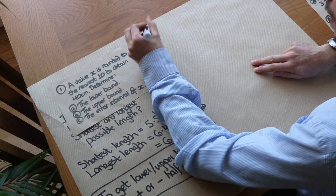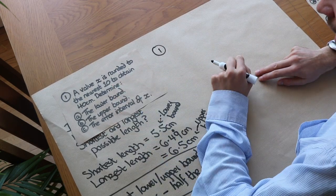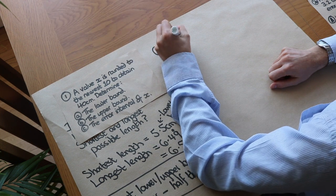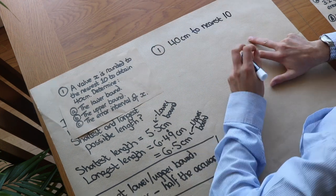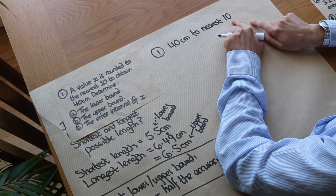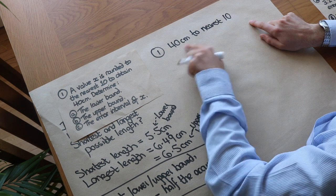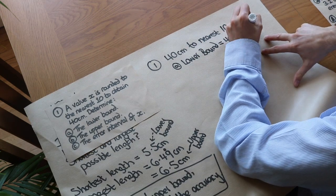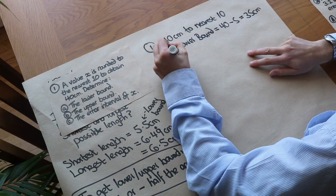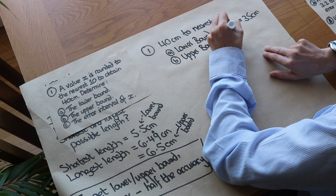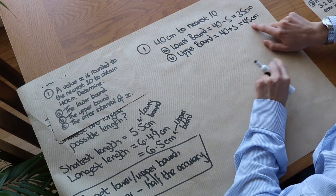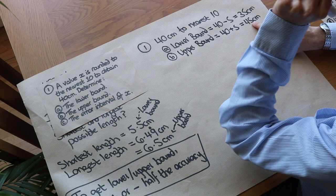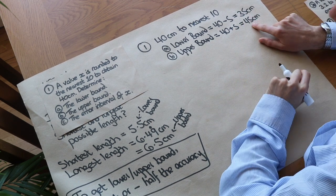The value of X is rounded to the nearest 10 to obtain 40 centimetres. Determine the lower bound, upper bound, and error interval of X. The accuracy is to the nearest 10, and half of that is 5. So the lower bound is 40 minus 5, which is 35 centimetres — and indeed 35 to the nearest 10 is 40. The upper bound is 40 plus 5, which is 45 centimetres. Even though 45 rounds to 50, we mean a value just slightly less than 45, but we write 45, not 44.9 recurring.